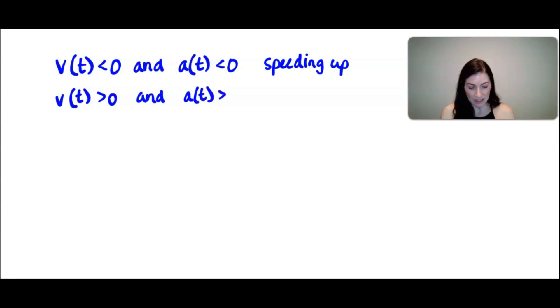So if at a specific time value, if velocity is negative and acceleration at that given time value is negative, the particle is speeding up. And we saw that in the last example. Also, if velocity is positive and acceleration is also positive, again the particle is speeding up. So whenever acceleration and velocity have the same sign, that means your particle will be speeding up.